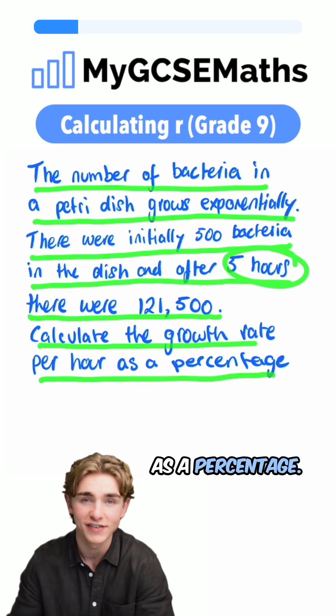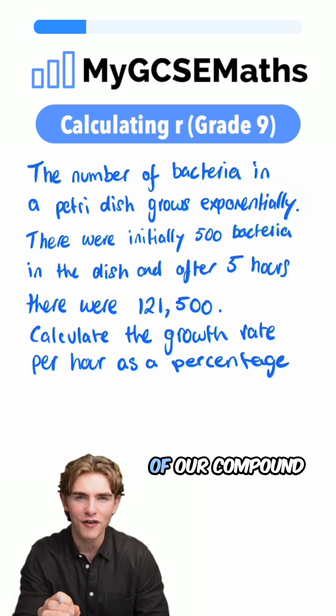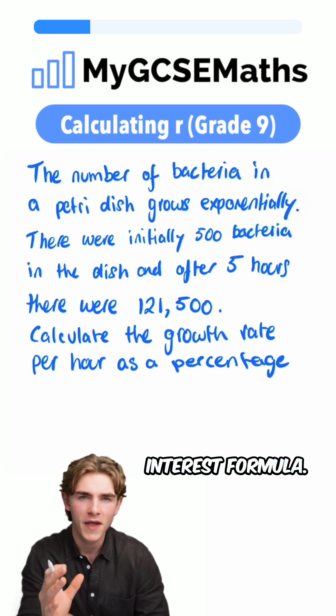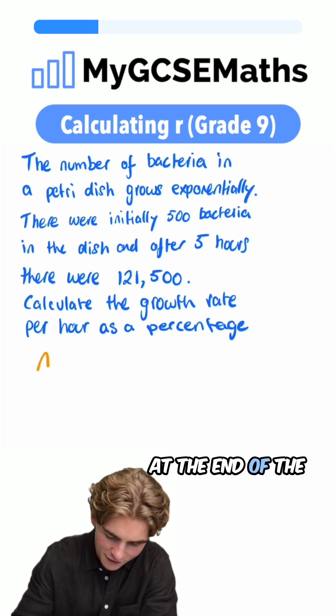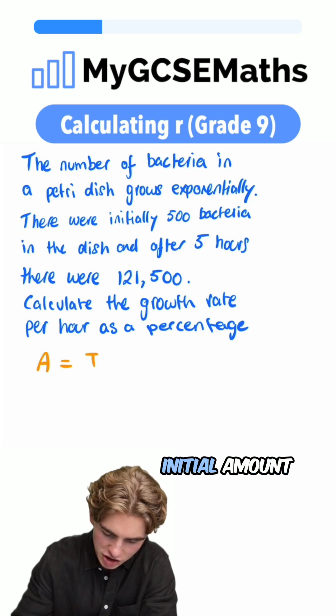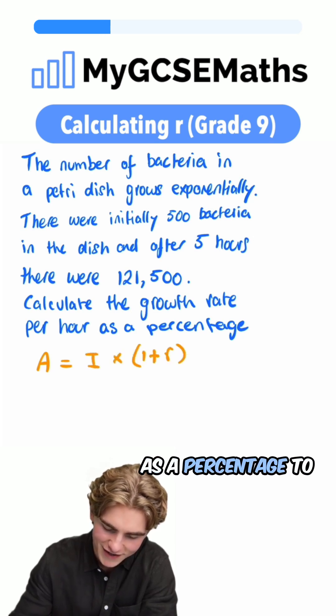Now it says that it grows exponentially, so we're thinking of our compound interest formula. What does our compound interest formula tell us? Well, it tells us that the amount at the end of the time is equal to the initial amount multiplied by one plus the growth rate as a percentage to the power of t, where t is the number of time periods.